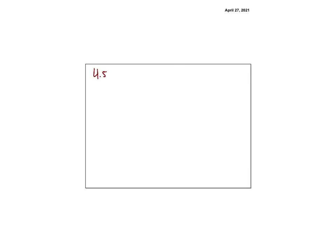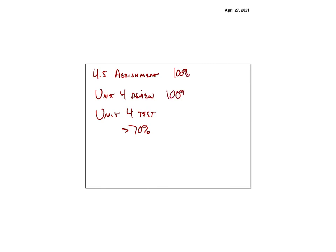What you have left: Section 4.5 assignments, the Unit 4 review, and then the Unit 4 test where you need to score greater than 70%. Aim for 100% on the assignments. I look forward to answering your questions. Thank you.